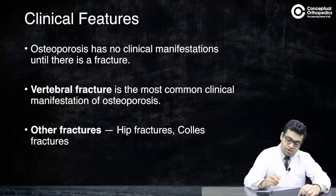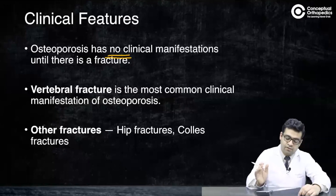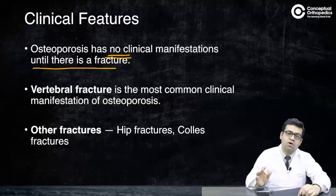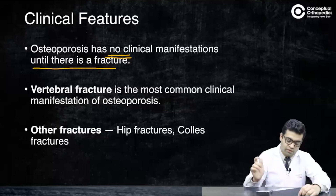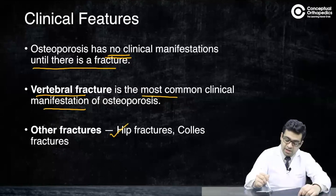What are the features of osteoporosis? Osteoporosis usually has no clinical manifestations because it involves weak bone but doesn't cause pain or deformity. Until there is a fracture, you may not be able to pick it up unless actively looking for it. A vertebral fracture is the most common initial manifestation. Other osteoporotic fractures include neck of femur fracture and fractures of the distal radius like Colles' fracture.